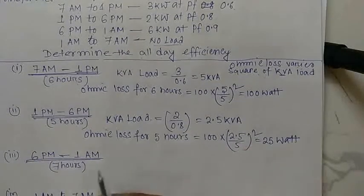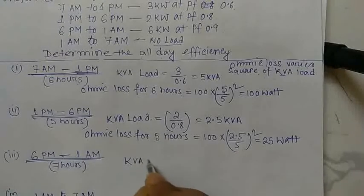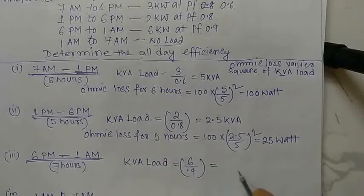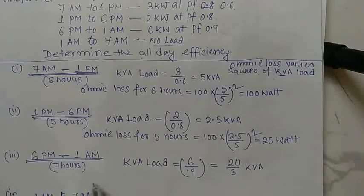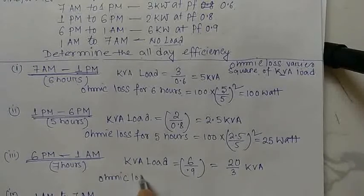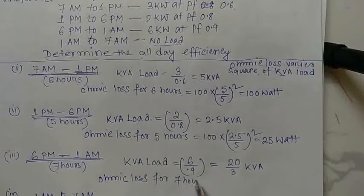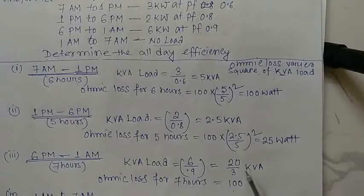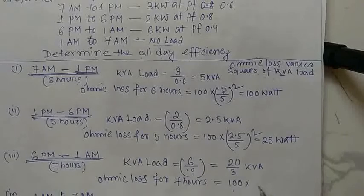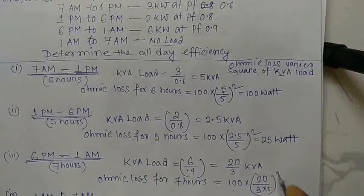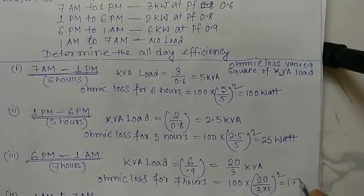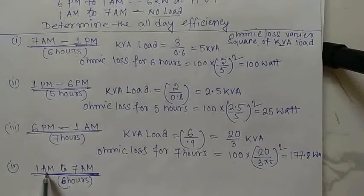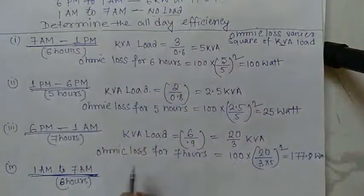For 6pm to 1am (7 hours), the kVA load is 6 kW divided by 0.9 = 20/3 kVA. The ohmic loss for these 7 hours is 100 × (20/3 ÷ 5)² = 177.8 watts.